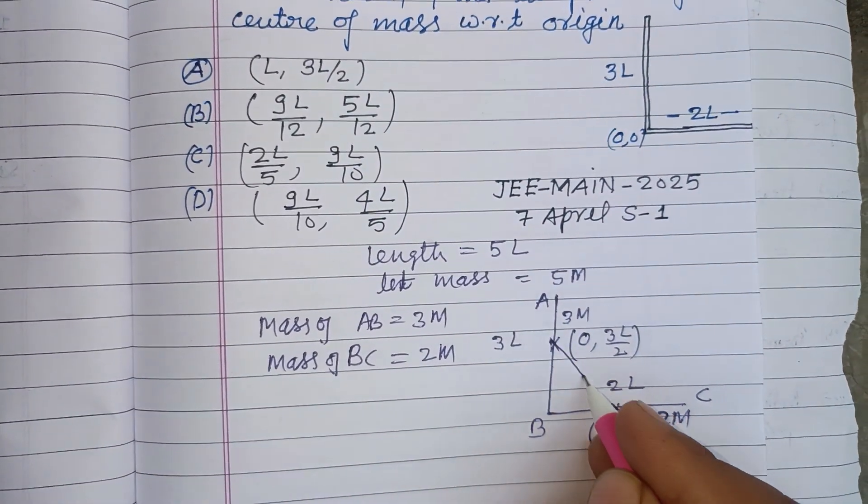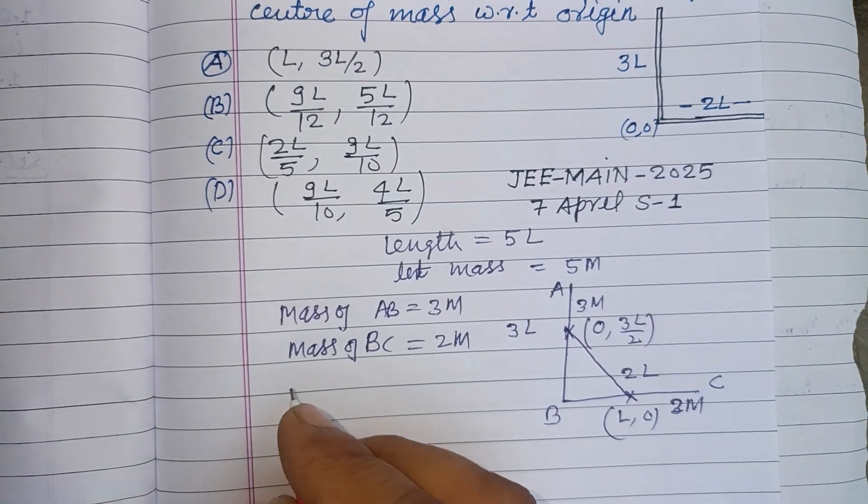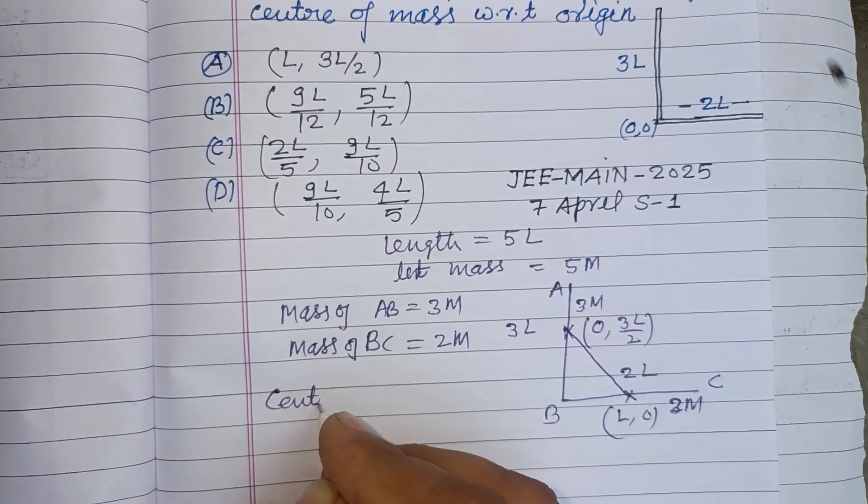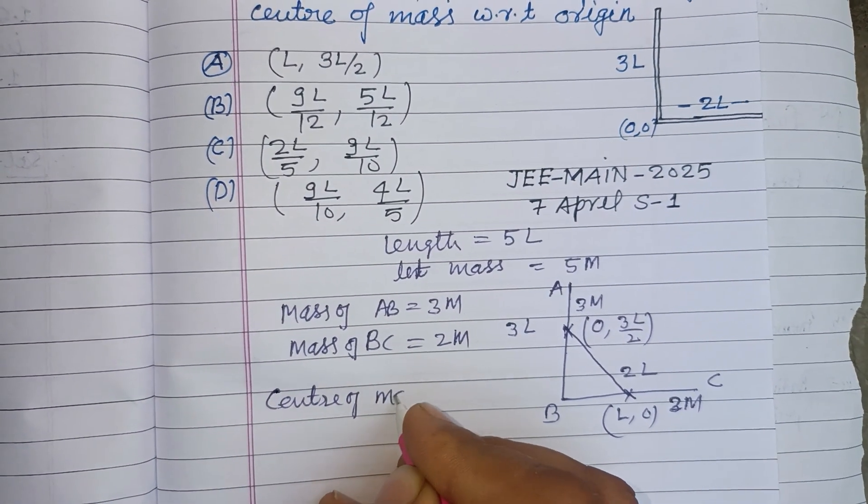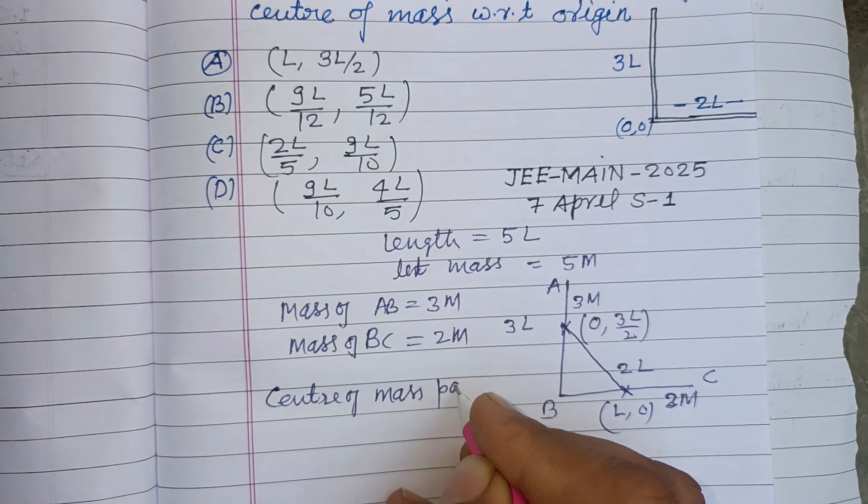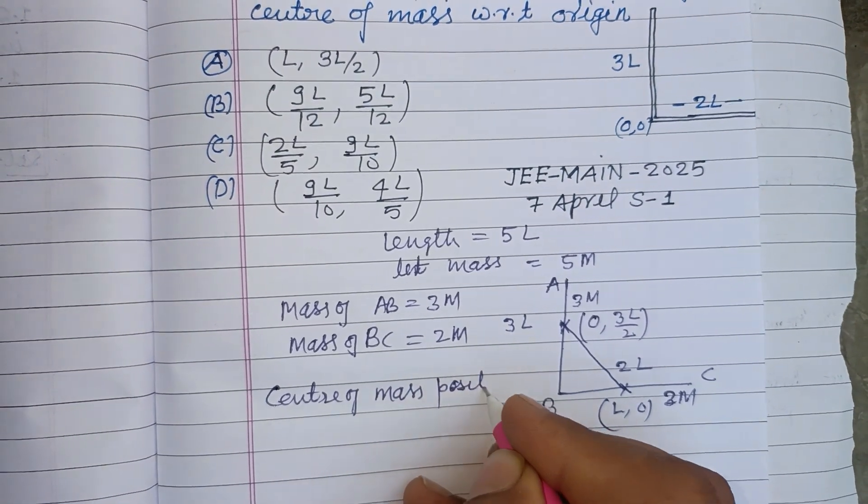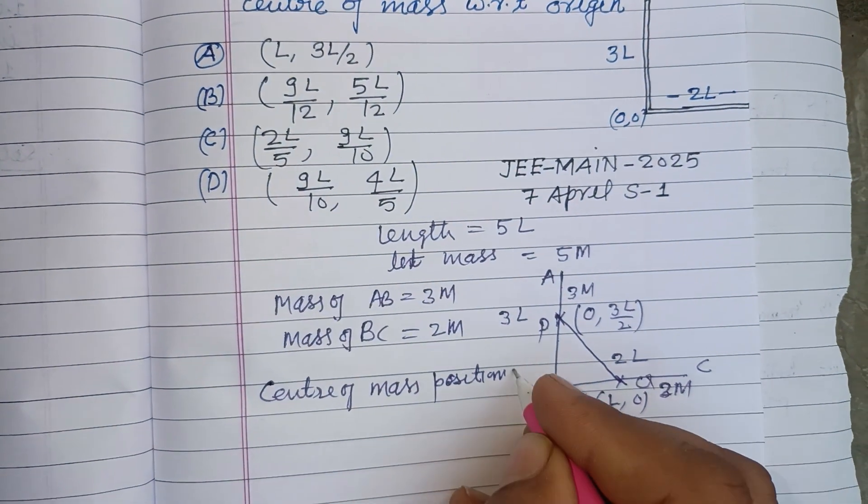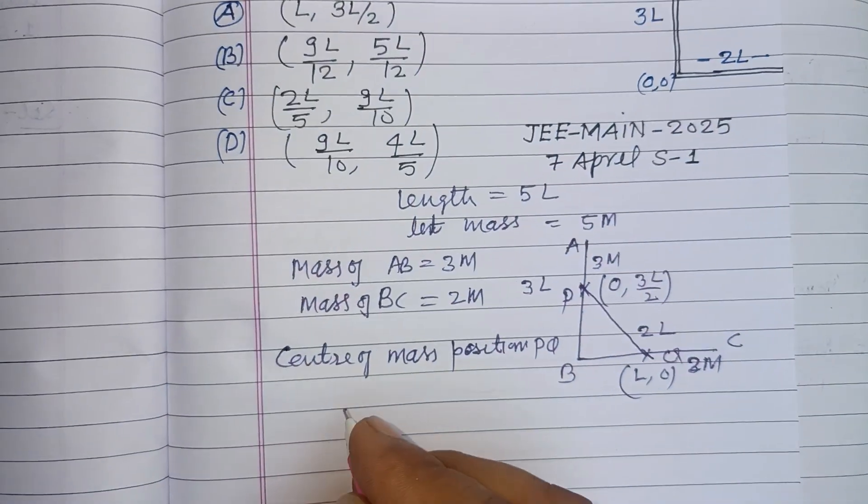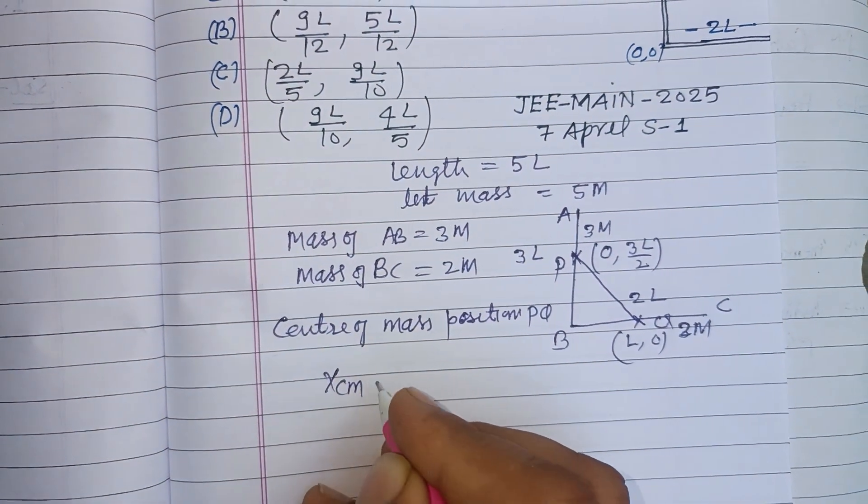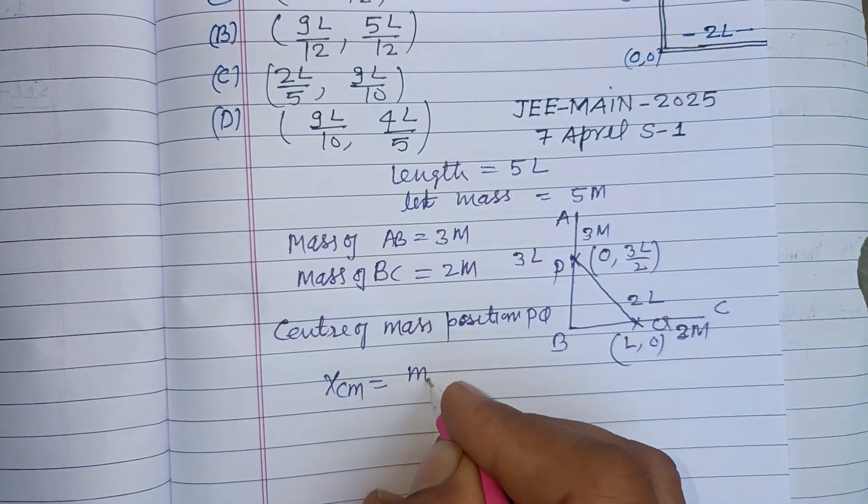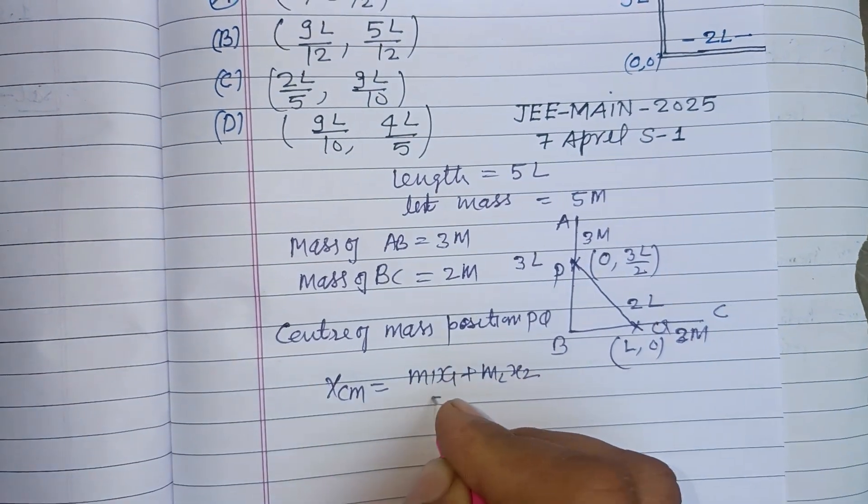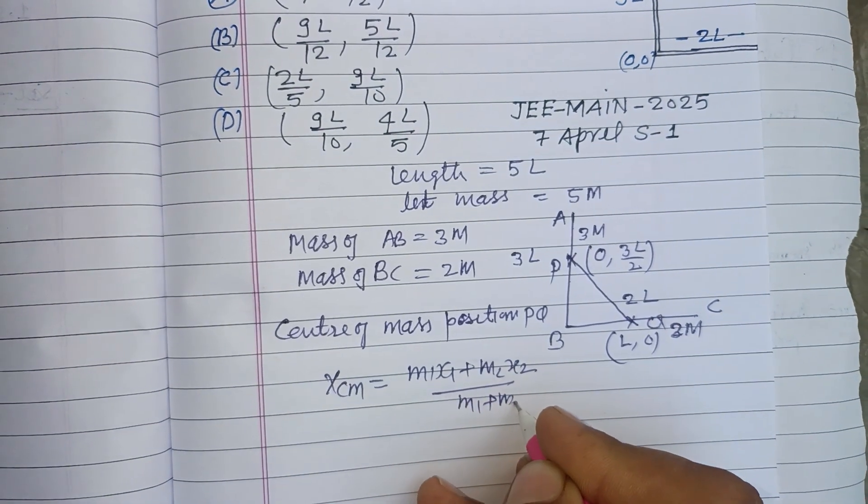And now we add this. So center of mass position of this is P, this is Q. P, Q.